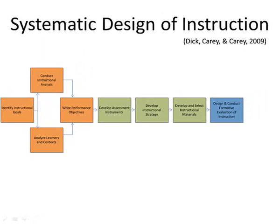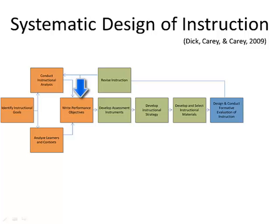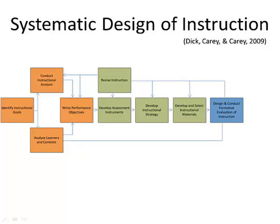As soon as materials are created, the next step is to design and conduct a formative evaluation of the instruction. This is formative because its purpose is to help improve the instructional processes and products. After the formative evaluation, you gain insights on how to improve the instruction. In the model, connecting lines show where you go back to revise — you may need to conduct another instructional analysis, write more focused performance objectives, develop new assessment instruments or instructional strategies, select different materials, or even reanalyze learners and their contexts. This allows you to revisit steps so you can improve and refine your instruction.